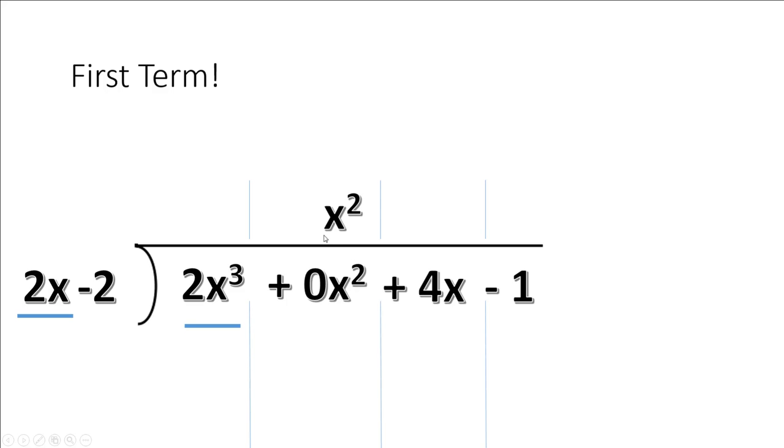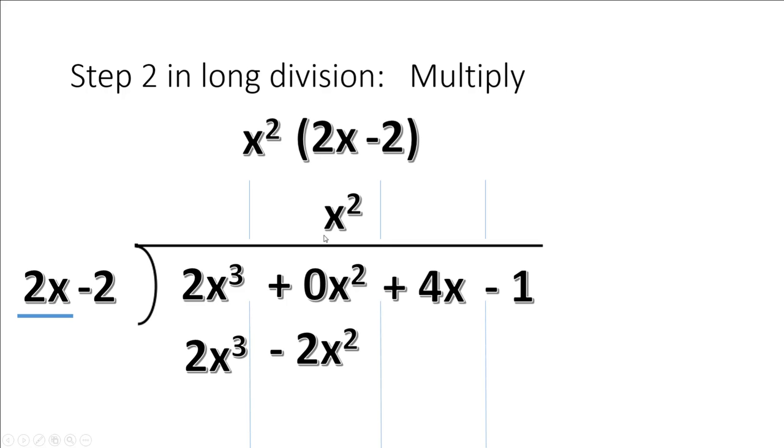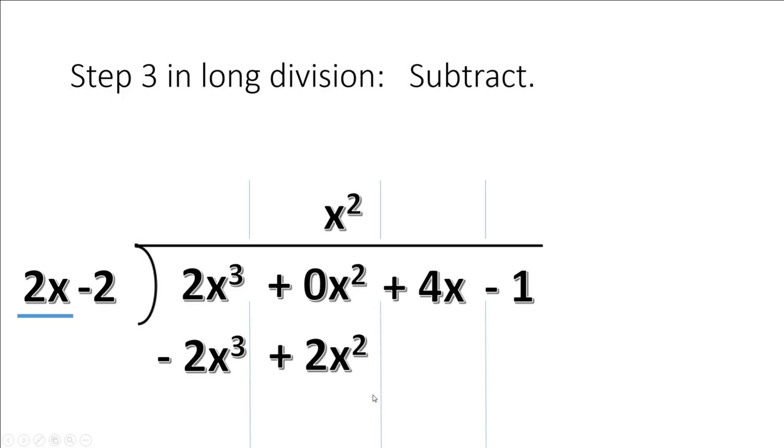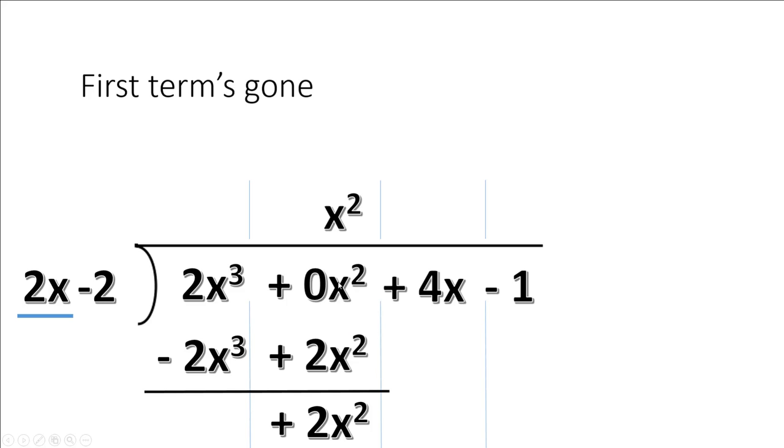Second step: multiply the x squared times 2x minus 2. x squared times 2x is 2x cubed. x squared times minus 2 is minus 2x squared. Step 3: subtract, which means add the opposite. So I've switched signs. I end up with 2x squared. Now I bring down the next term.